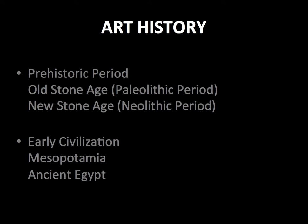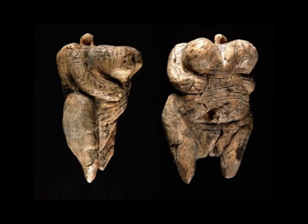Our first example is called the Hohle Fels figure. In real life this is only about a couple of millimeters high — very small. At a certain point humans figured out how to make tools and developed crude early stone cutting tools, eventually refining them. These figurines are believed to be some type of fertility goddess. There's a little notch where the head would be, believed to be where a string passed through, possibly worn around the neck.